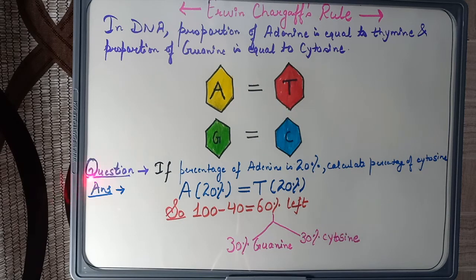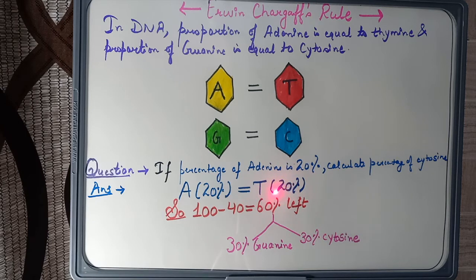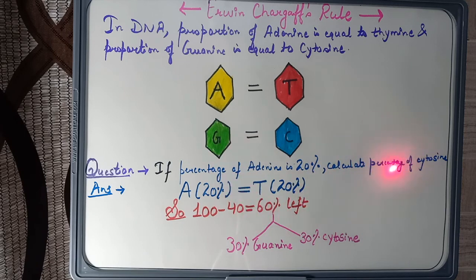Let us solve a question based on Chargaff's rule. If the percentage of adenine is 20%, calculate the percentage of cytosine. If adenine is 20%, then thymine is also 20%, totaling 40%. The remaining 60% is split equally, so guanine is 30% and cytosine is 30%. This demonstrates how Chargaff's rule is used to calculate the percentage of one nitrogenous base when another is given.